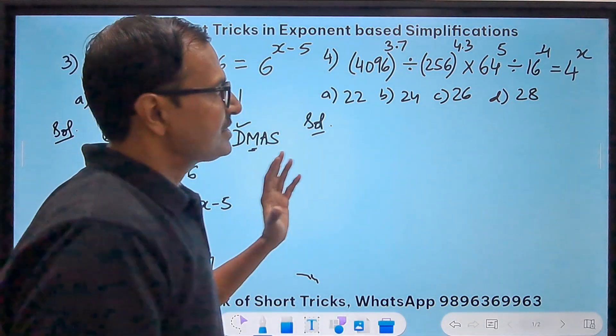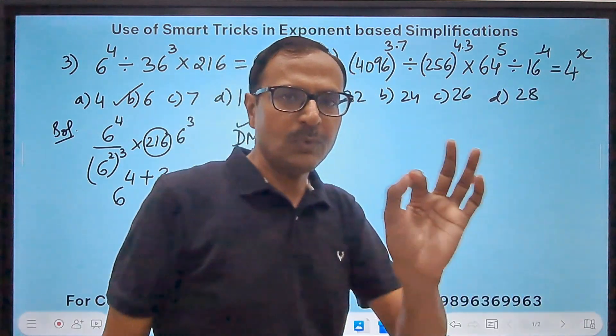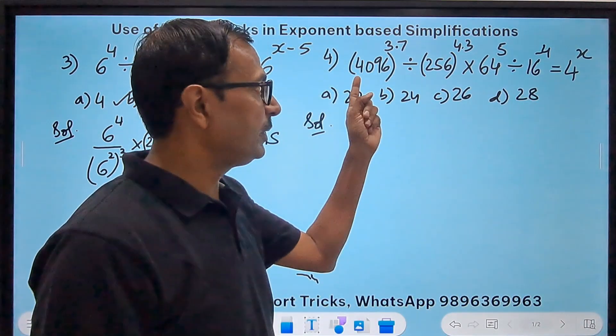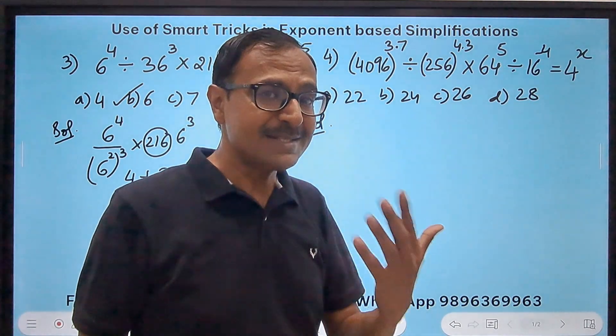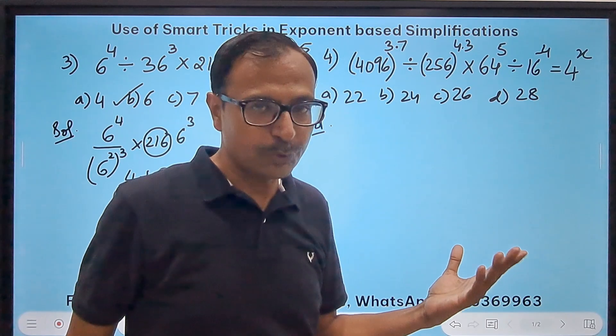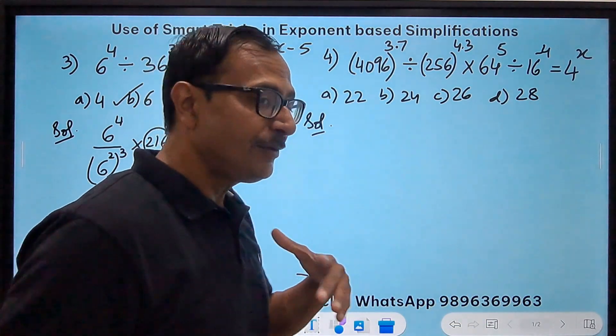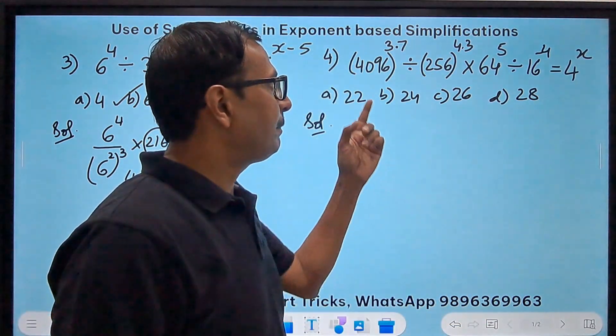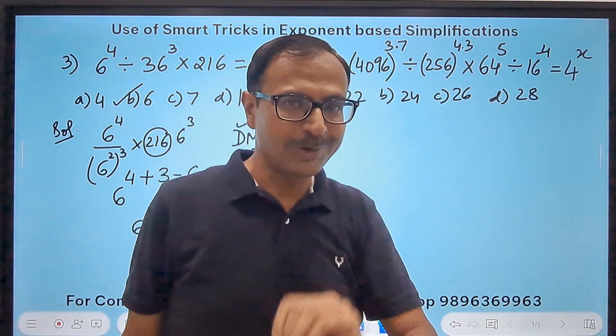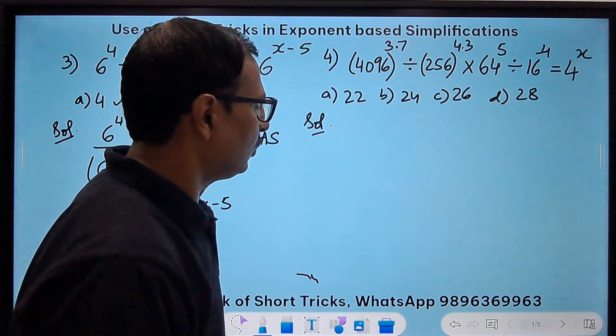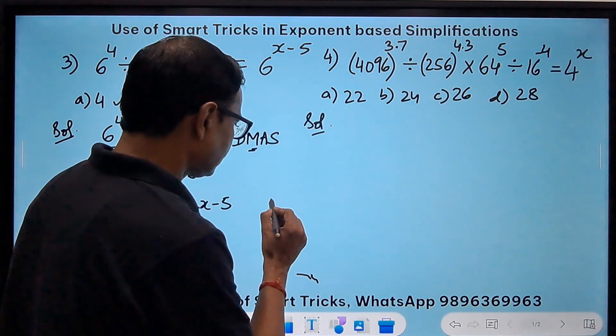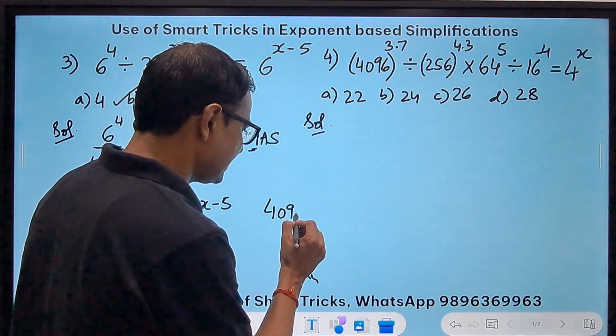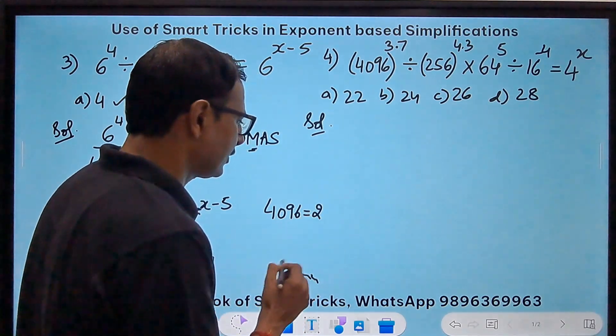Well, when I see all these, I get one thing in mind. Either the base has to be 2 because all of them are even numbers and they seem to be the powers of 2. Or if you are smarter, you will take the powers of 4. Now let's check how. 4096 is actually 2^12.